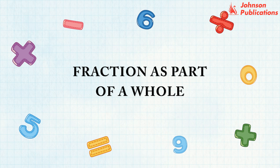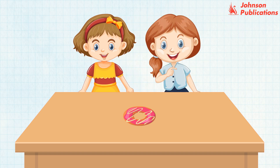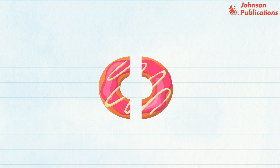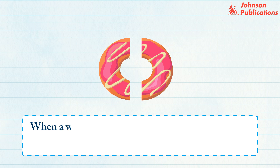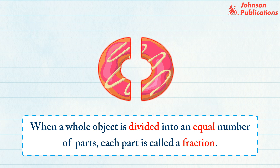Fractions: fraction as part of a whole. Srishti has a donut and she decided to share it equally with her friend Pinky. She cut the donut into two parts to form two equal halves. When a whole object is divided into an equal number of parts, each part is called a fraction. Thus, a fraction is the part of a whole object.